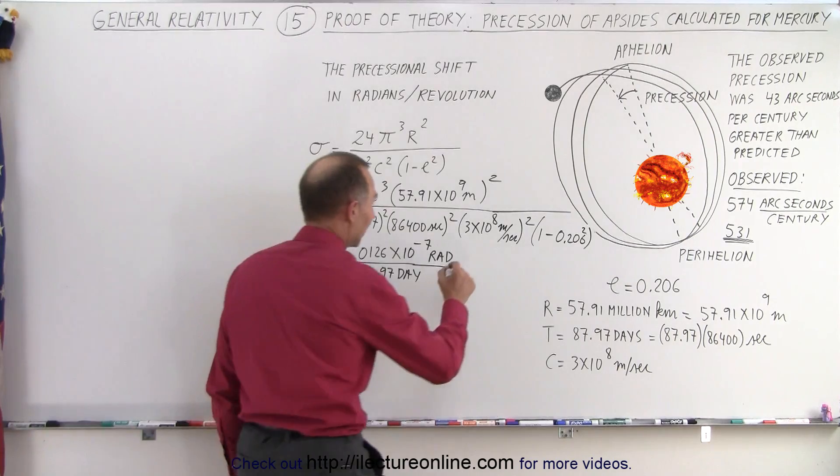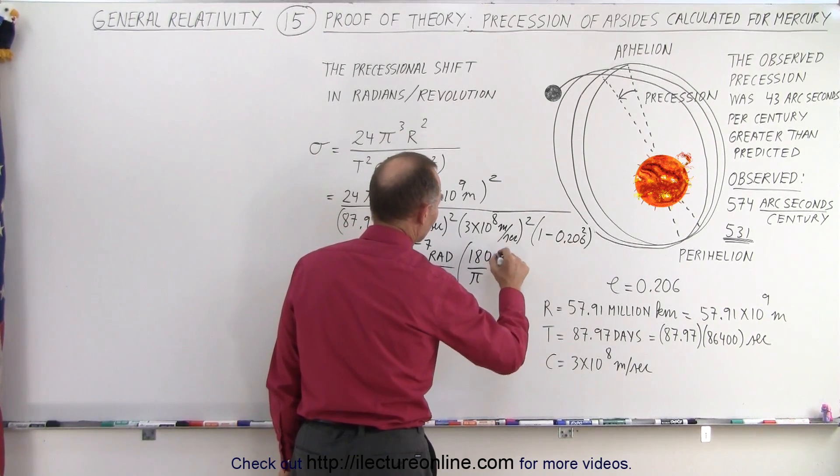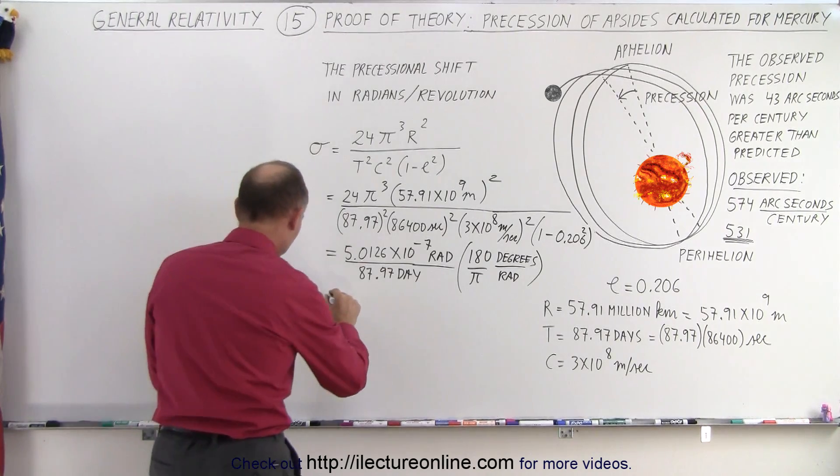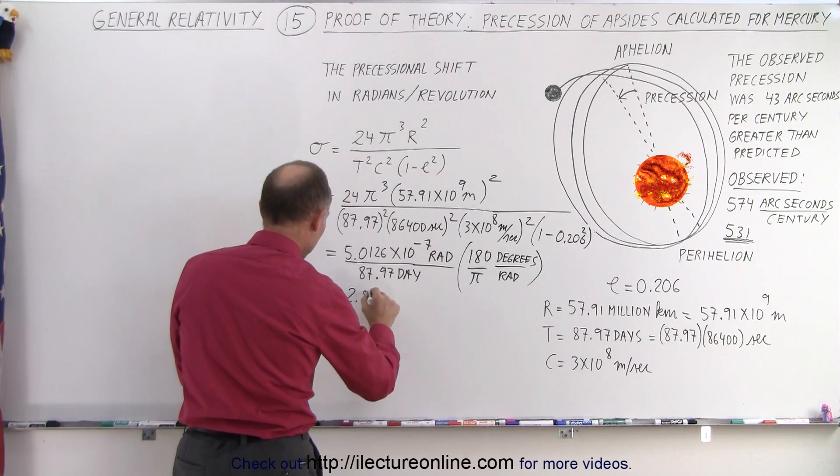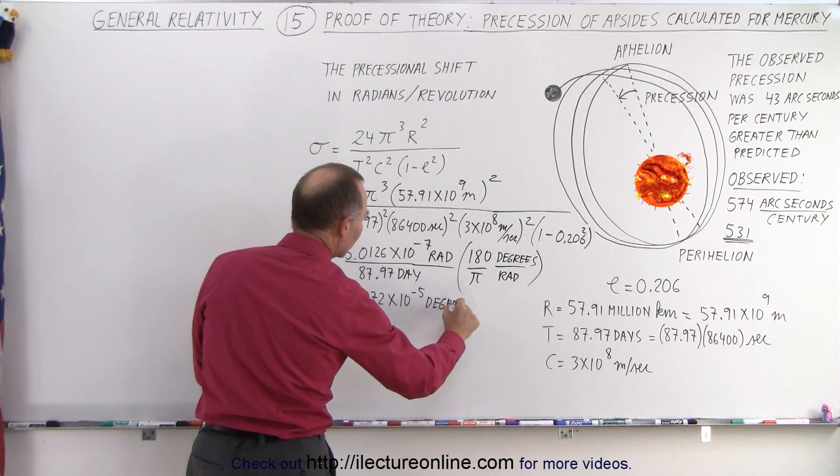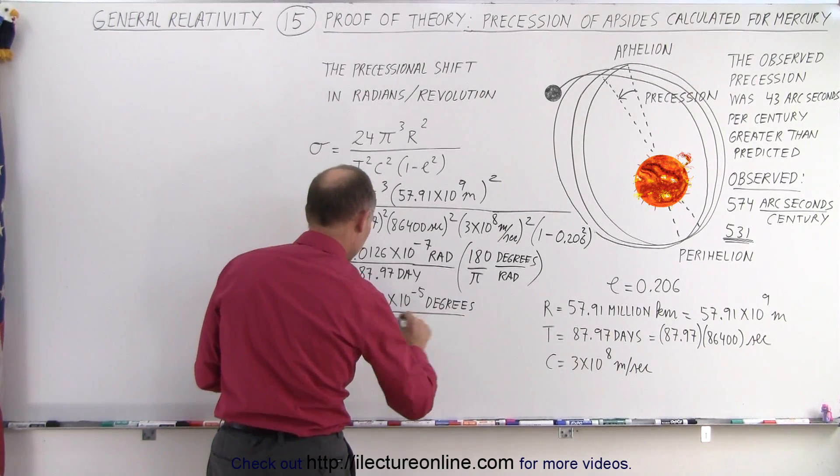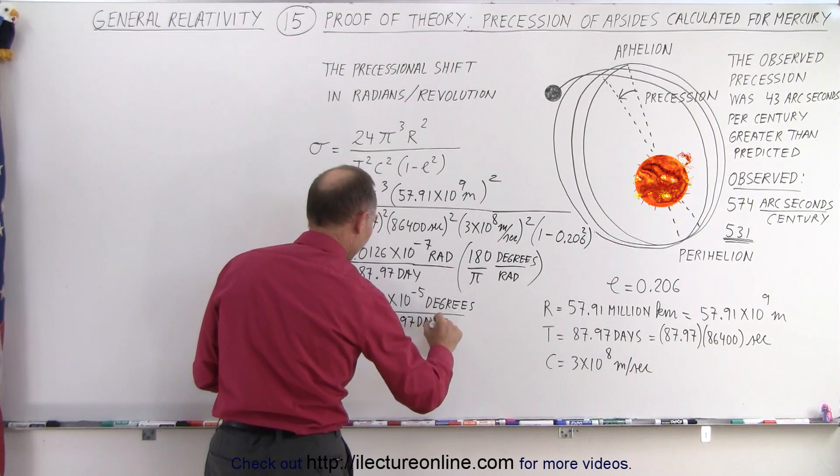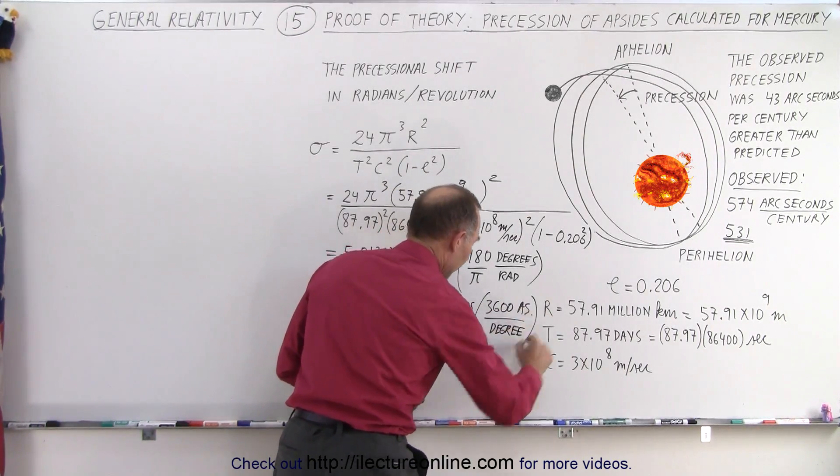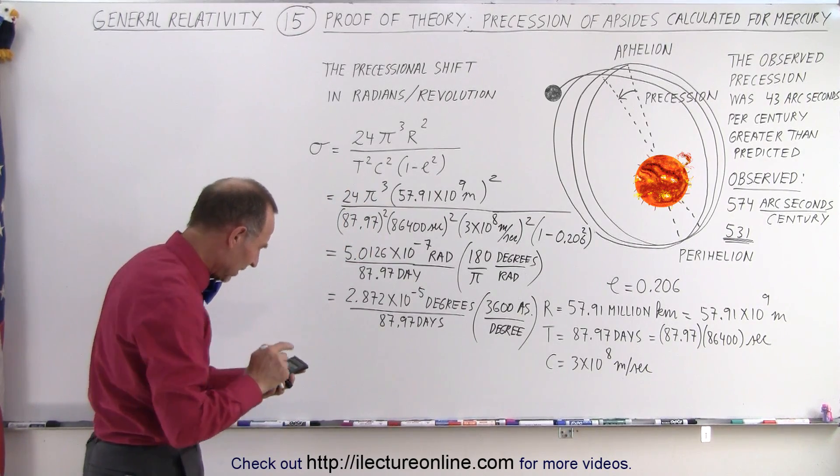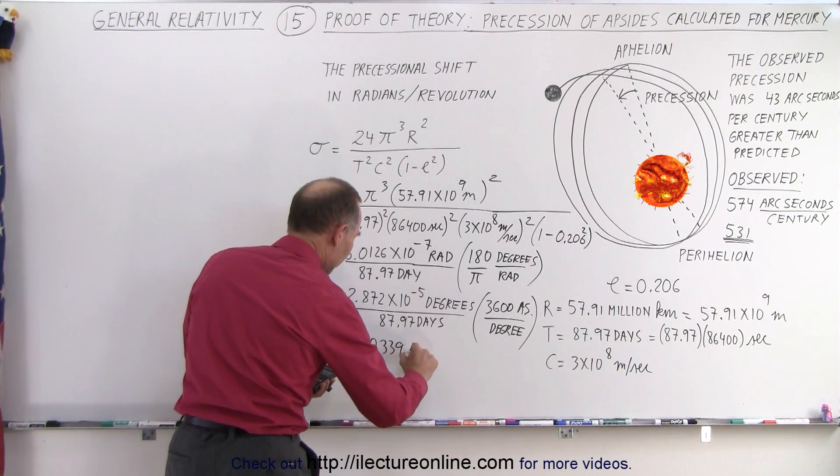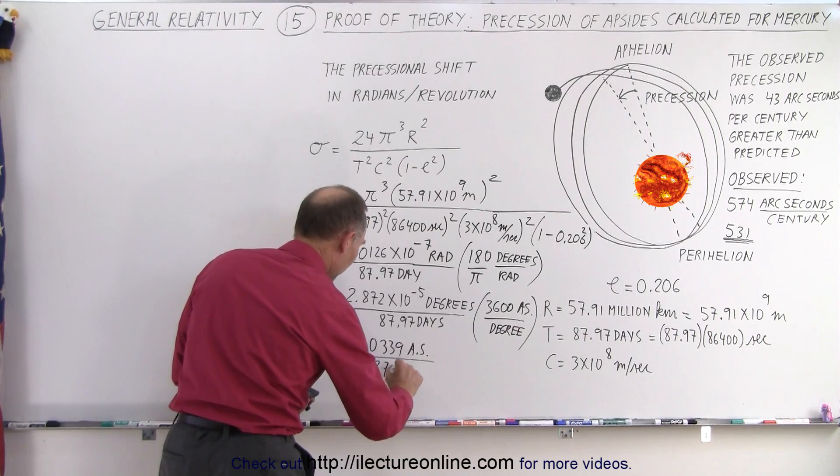Now we have to multiply that times 180 divided by π to convert that to degrees per radians. So if we make that change, we multiply that times 180 and divide by π. And now we get, so this is equal to 2.872 × 10⁻⁵ degrees per 87.97 days. Now we can convert that to arcseconds. So there's 3,600 arcseconds in the degrees. So we multiply that times 3,600. And now we get, so this is equal to 0.10339 arcseconds per 87.97 days.